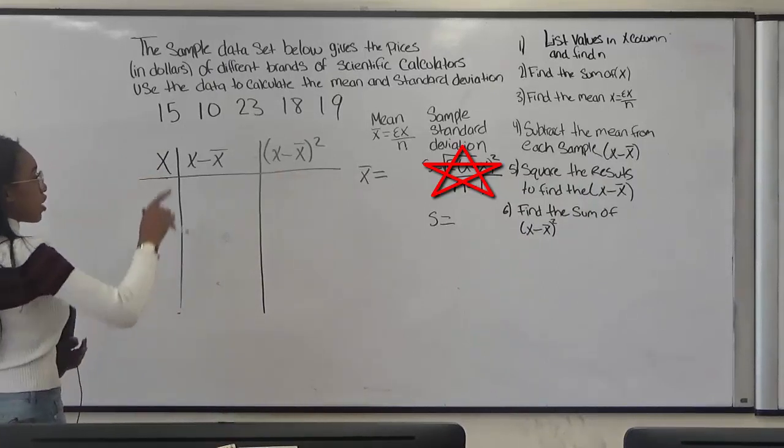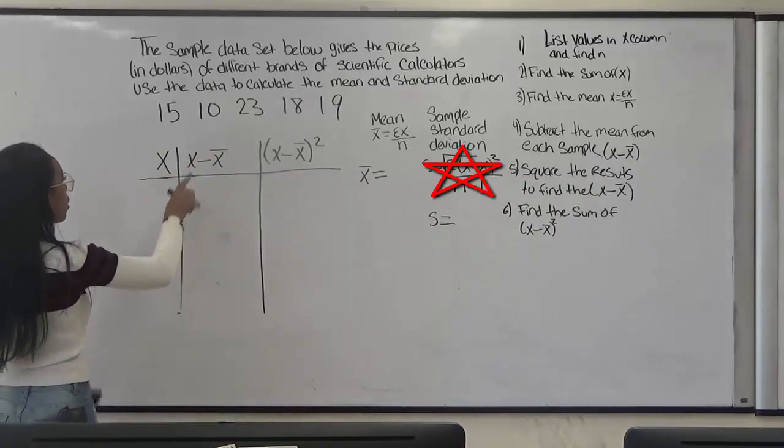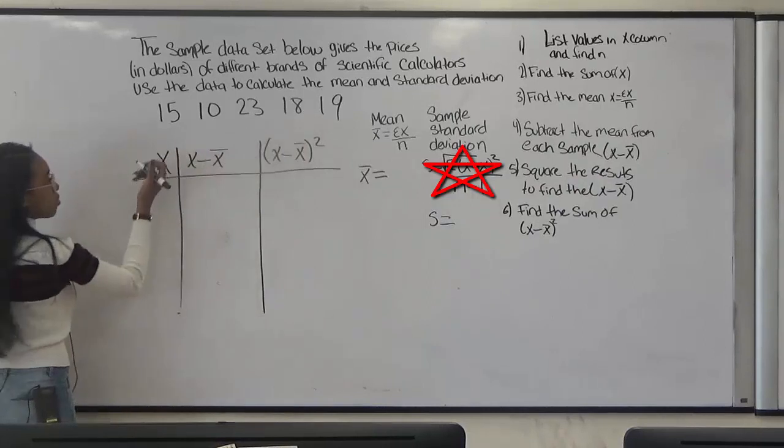So the first thing we're going to do is list the values in our x column and find the n. So here are our values and we're going to list them in the x column.